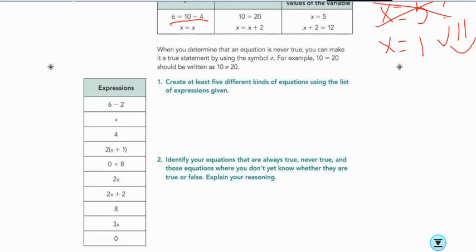So, let's go and look. When you determine that an equation is never true, you can make it a true statement by using a symbol not true. So, for example, 10 equals 20 should be written as 10 is not equal to 20.